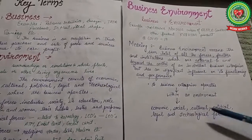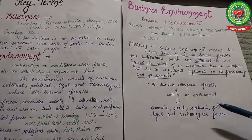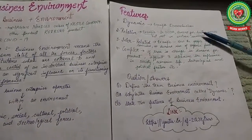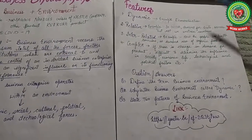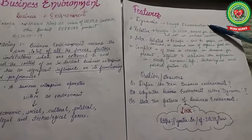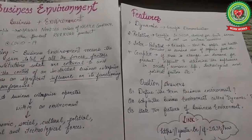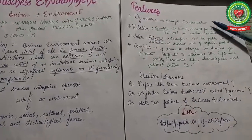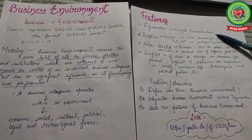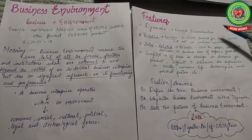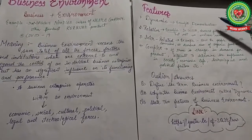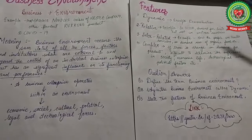Now our topic is the features of business environment. The first feature is 'dynamic' — meaning flexible or changeable. For example, demonetization occurred on 8th November 2016, which badly affected the economy. It was a political environment change that affected business-related activities. At that time there was a reduction in production and no income was generated in the economy. So the business environment is dynamic in nature — it changes due to various reasons.